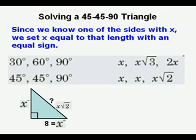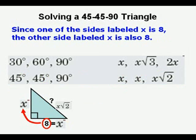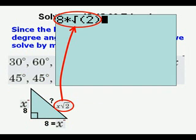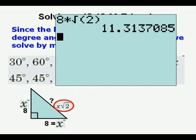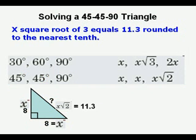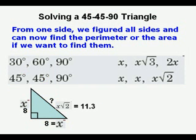Since we know one of the sides with x, we set x equal to that length with an equal sign. So x equals 8. That other side equals 8. And now we need to find the long side. Since it is x square root of 2, we solve by multiplying x by that number. Here we have 8 times square root of 2. We get 11.3. And now that we've found all sides, we can find the perimeter or the area of that right triangle if we want to.